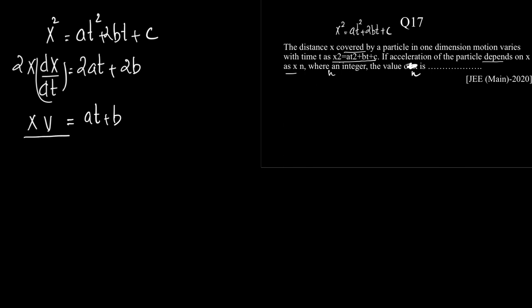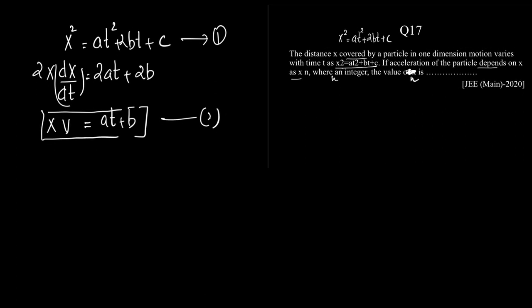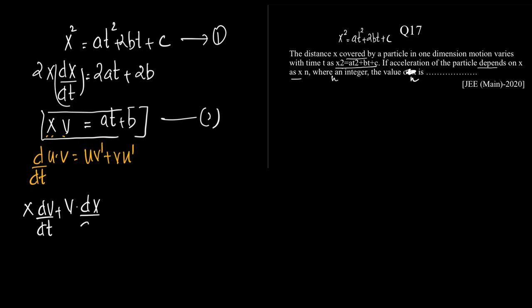Let me label the previous result as equation two. Now if we differentiate further, we need to use the product rule: d/dt of (u · v) = u·v' + v·u', applied to the two functions x and v. So: first into derivative of second plus second into derivative of first equals derivative of (at + b), which is a.